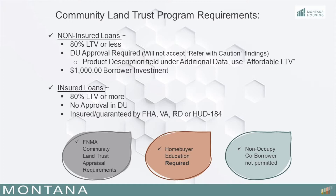Community Land Trust loans made with an LTV higher than 80% or where the borrower does not qualify for approval in DU may still be purchased by Montana Housing, but must be insured or guaranteed by FHA, VA, RD, or HUD 184 with Montana Housing in the first lien position. The leasehold estate created by the Community Land Trust ground lease must constitute real property under applicable law. In all respects, the ground lease must be valid, enforceable, and in full force and effect. Lenders must ensure that any mortgage secured by a Community Land Trust property and delivered to Montana Housing is supported by the appropriate leasehold interest documents.